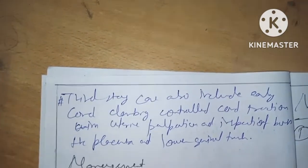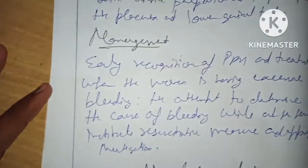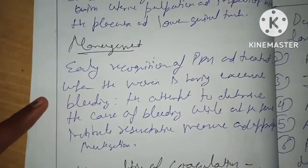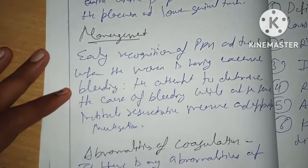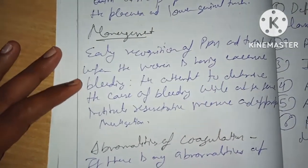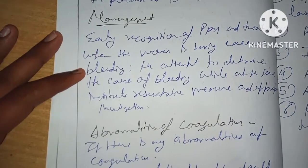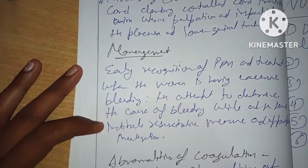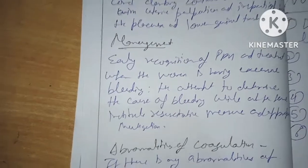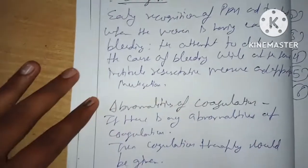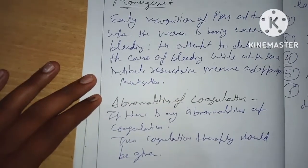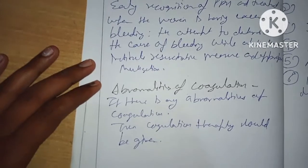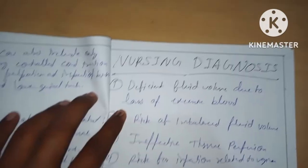Early recognition of PPH and treatment: when the woman is experiencing bleeding, attempt to determine the cause of the bleeding while assessing pulse rate and blood pressure. If there is any abnormality of coagulation, coagulation therapy should be given.